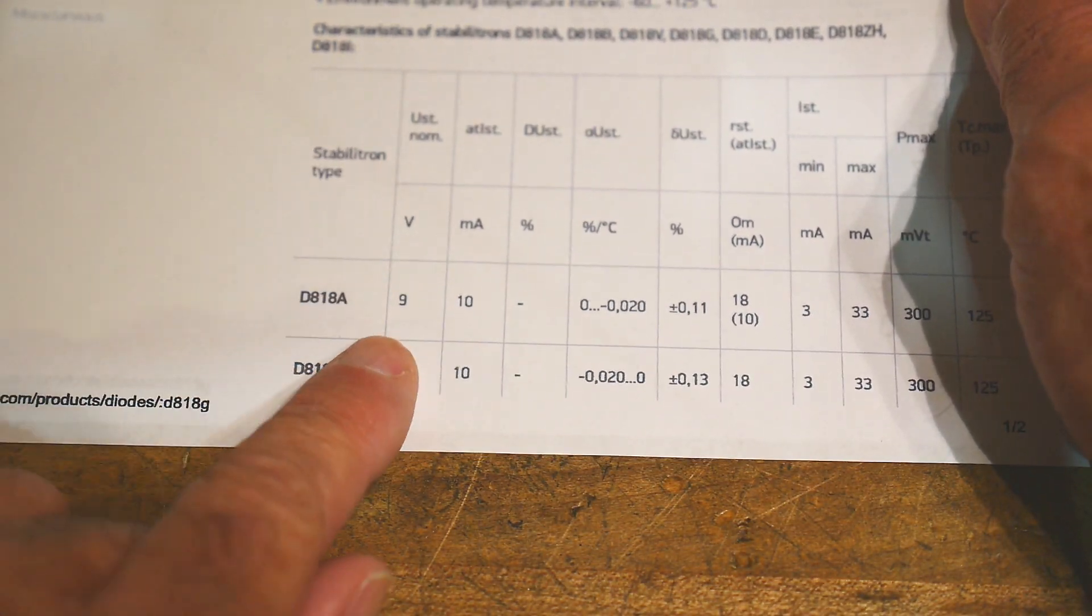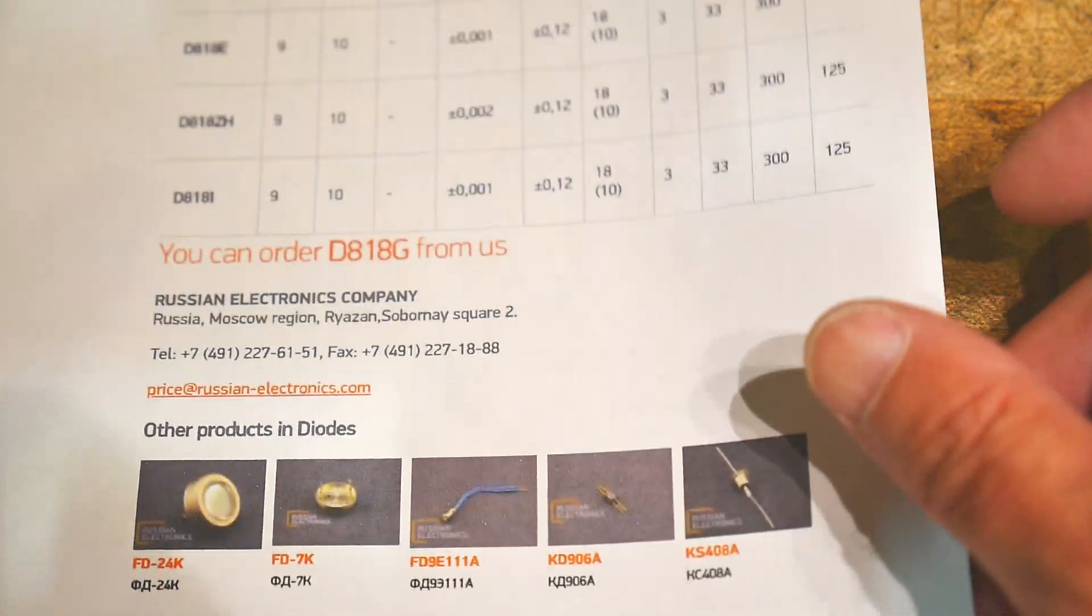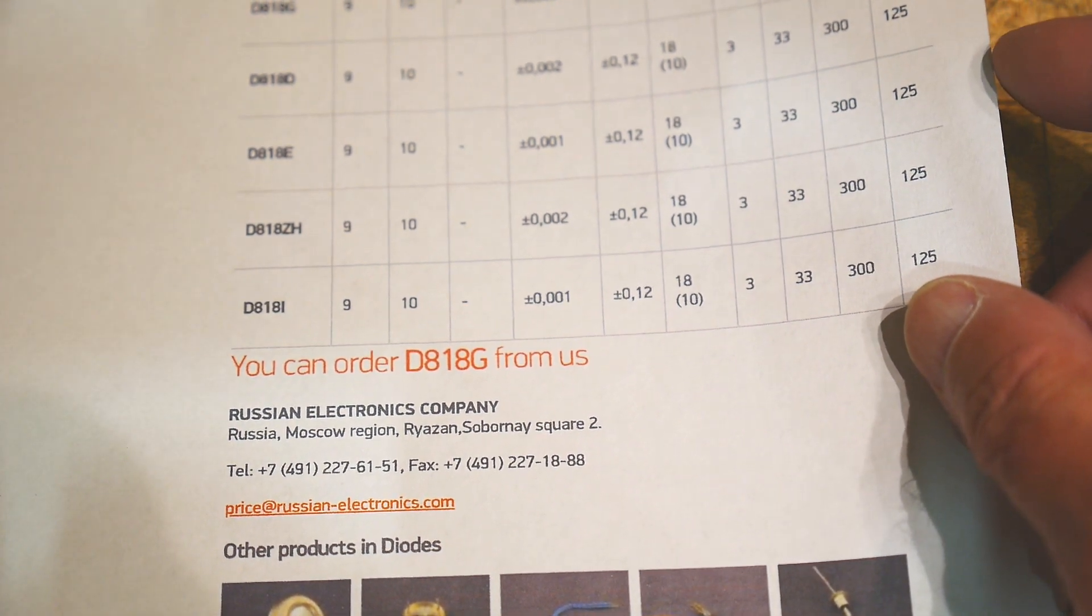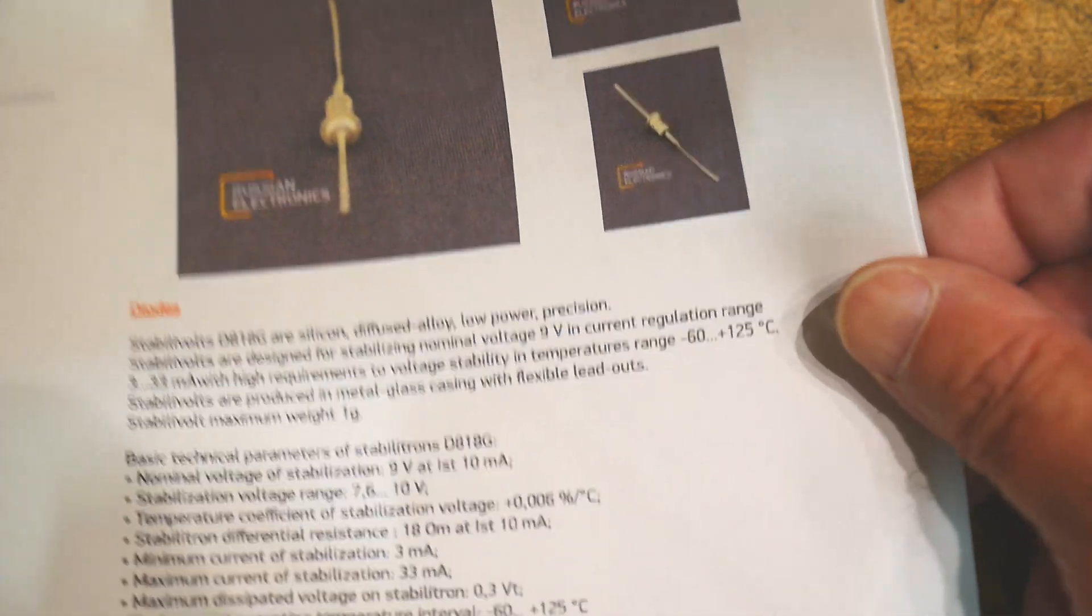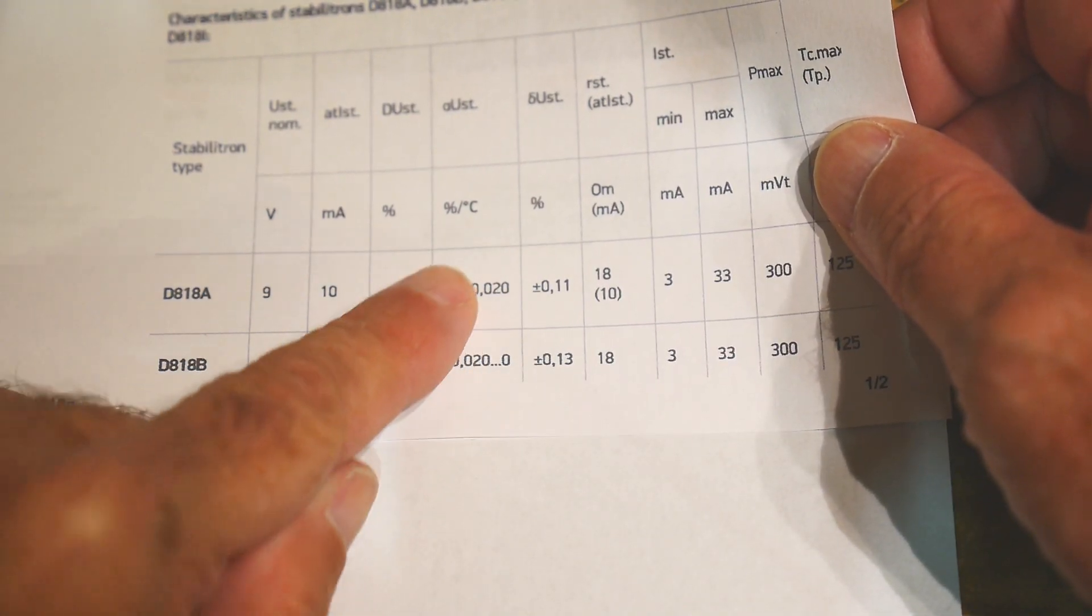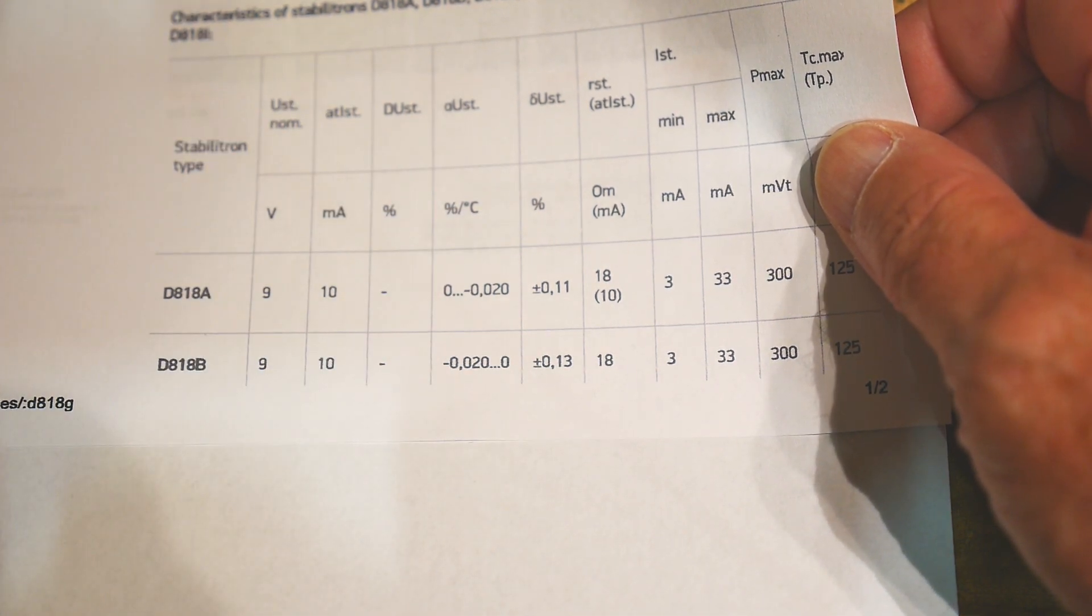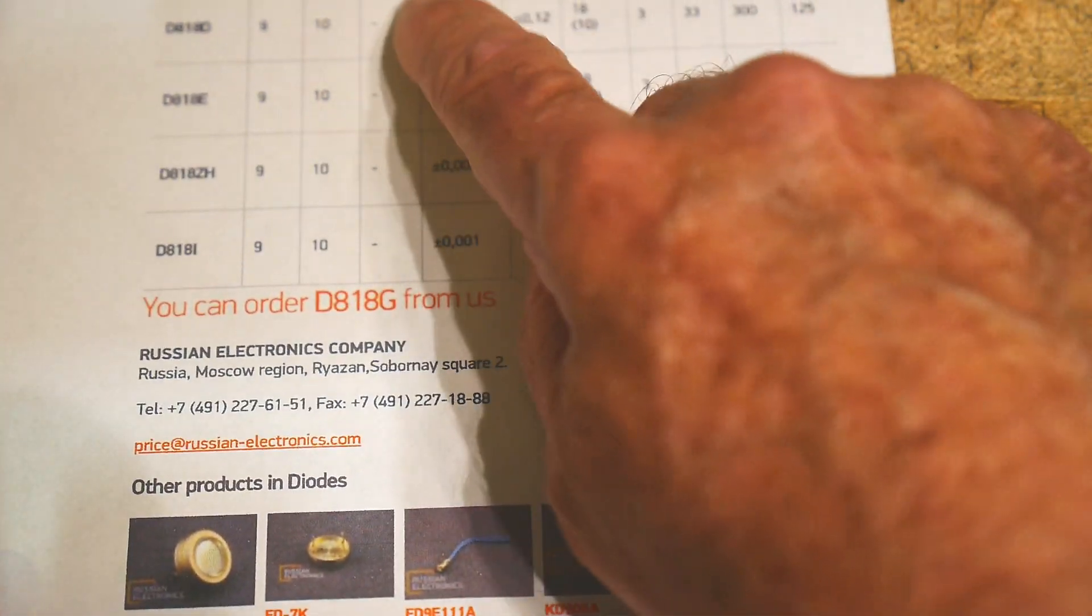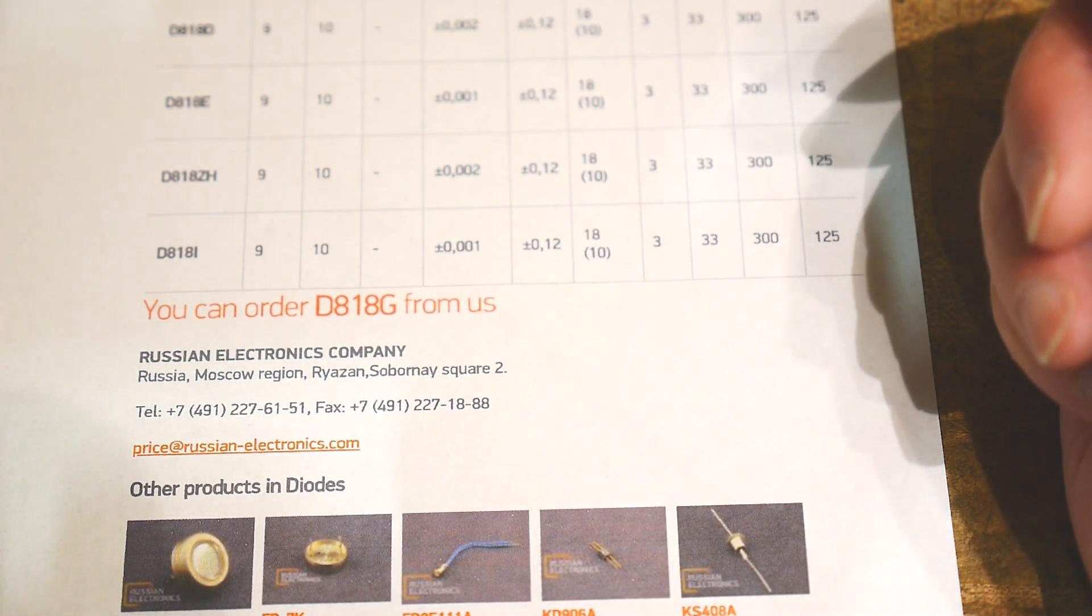It has some different versions, so there's the 18A, B, no C, A, B, V, G, D, E, Z, H, and I. I have the G version, so the G version stability is the percent change per degree C, and the G version is .005% per degree C, so that's pretty good.